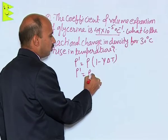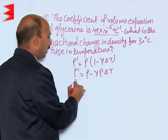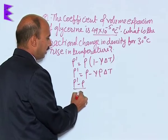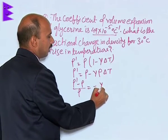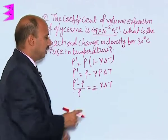So we can write rho dash is equal to rho minus gamma rho delta T. And now we can write rho dash minus rho divided by rho is equal to minus gamma delta T. The negative sign is telling you there is a decrease in the density.